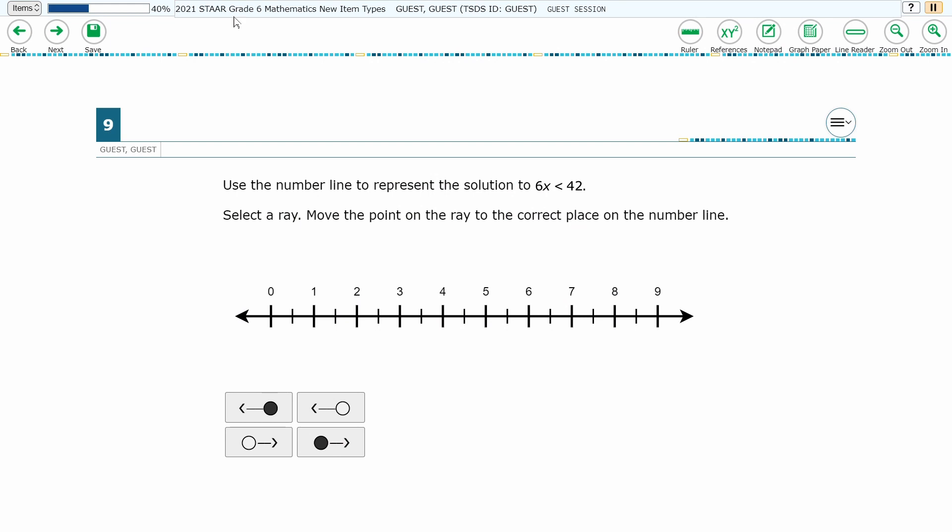Here is a number line item from the 6th Grade Math New Item Sampler Set. The student will be presented with an equation and number line. They will have to solve the equation, choose a ray that represents the equation's solution, and place the ray on the number line in the appropriate location.